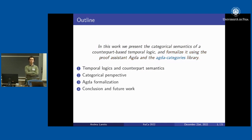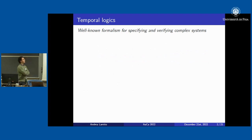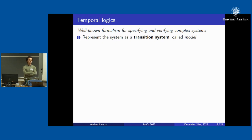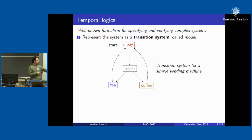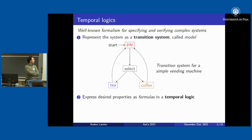Temporal logics are essentially a formalism for specifying and verifying the properties of complex software systems. The idea is to represent your system as a transition system, which we call the model. Here is an example of a transition system for a simple vending machine: you start from the base state, and the only transition available is to go into the select state where you can select the beverage you want to buy — for example, tea or coffee.